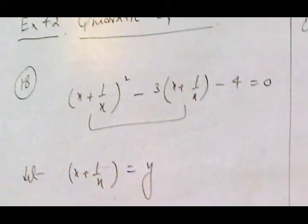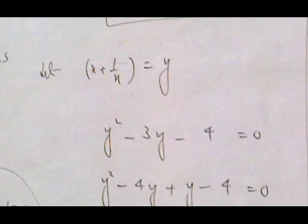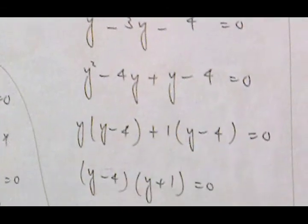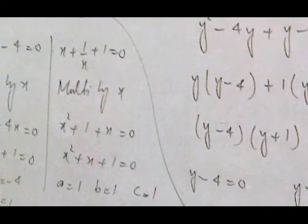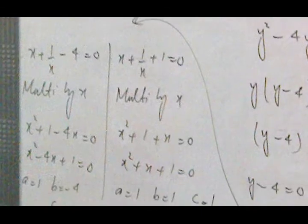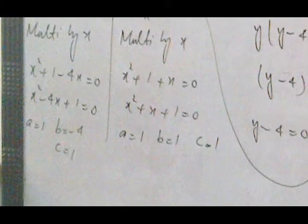In the next question we have (x + 1/x)² and (x + 1/x). We let x + 1/x equal y, and the squared term becomes y². Factorizing gives y equals minus 4 and y plus 1 equals 0. We put back the value of y: since there is x in the denominator, multiply both sides by x to get a quadratic equation, then apply the quadratic formula to get the answer.